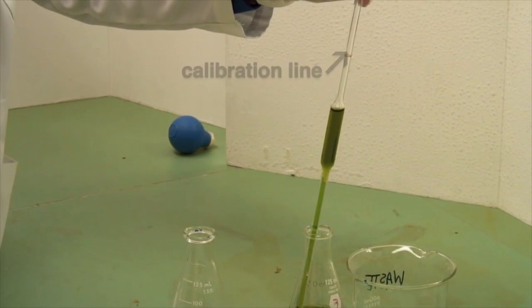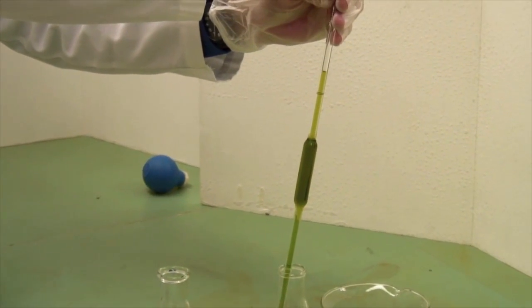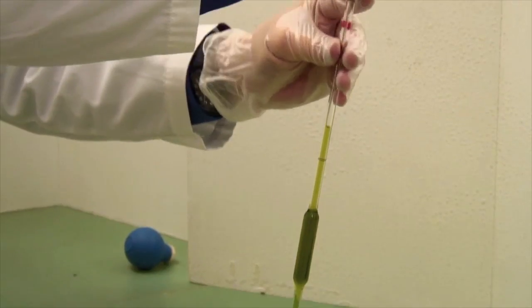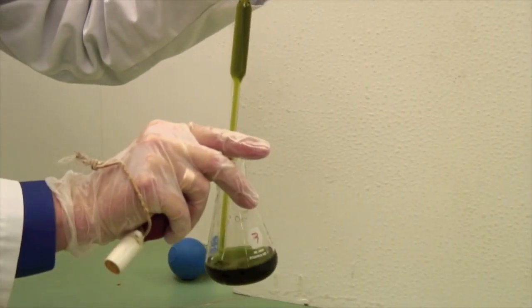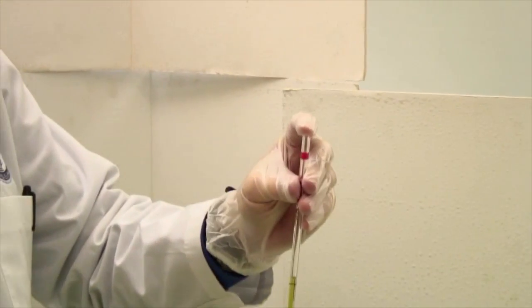It will move a lot faster when it's in the neck rather than in the bulb. Once it's well above that line, remove the bulb and capture it with your index finger. Use your index finger, not your thumb.